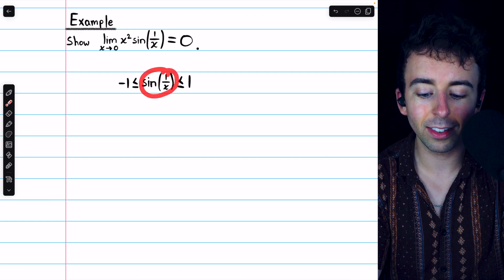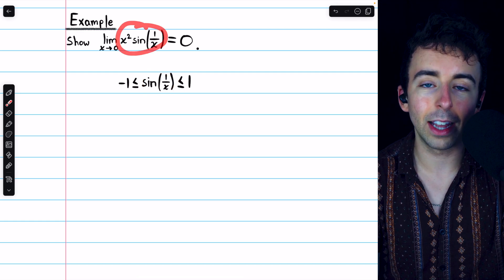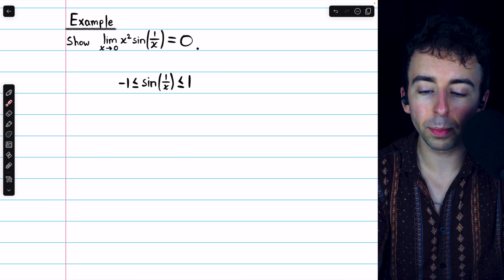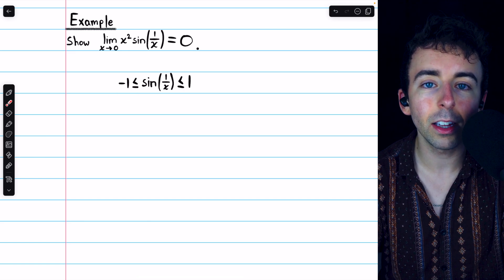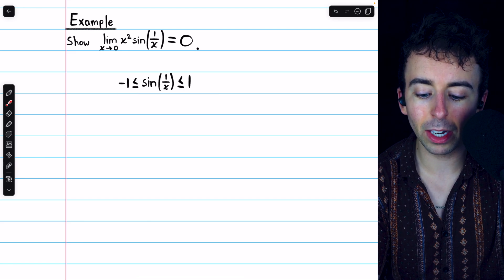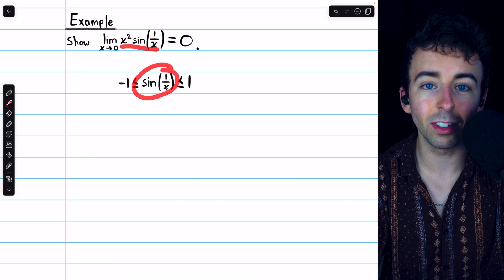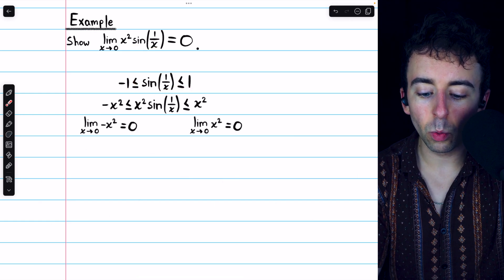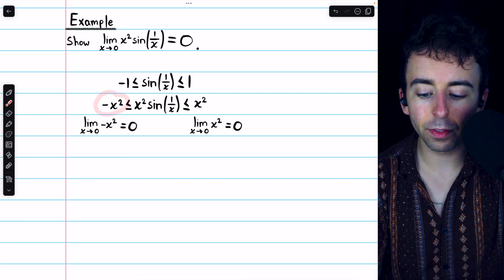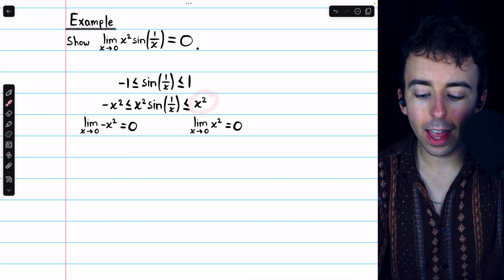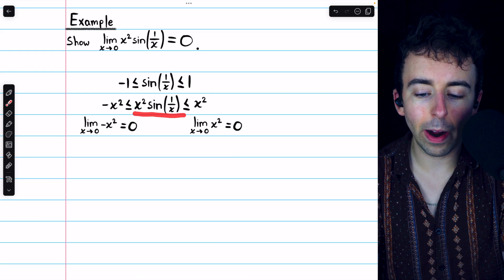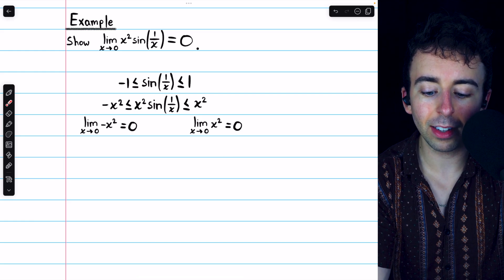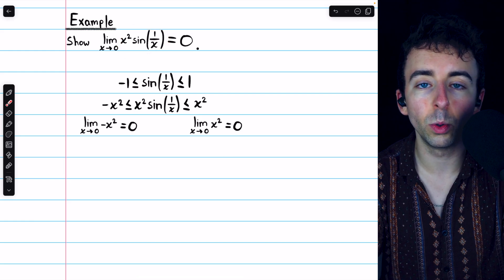Now we should note that sin(1/x) is not the function whose limit we're trying to evaluate. We're trying to evaluate the limit of x² times sin(1/x). So then the question becomes, how do we change this into this? The answer is simple. All we have to do is multiply across the whole inequality by x². Then in the middle, we'll have x² times sin(1/x), which is exactly what we want.